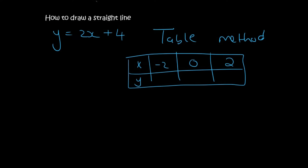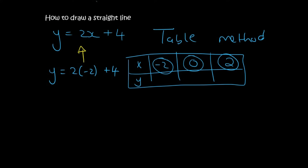You then plug those values into the equation to find the matching y value. For the first x value, you chose minus 2. You can choose whatever you like, by the way. It's just nice to choose something negative, then a 0, and then something positive. But you could have chosen minus 3, 0, and 3, or minus 1, 0, and 1. It's up to you.